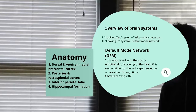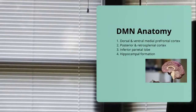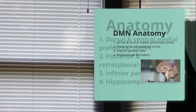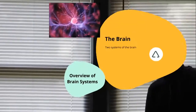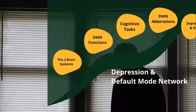A great description of the default mode network is that it is the part of the brain associated with socio-emotional function and is responsible for the self experienced as a narrative through time. The anatomy of the default mode network is made up largely of the dorsal and ventral medial prefrontal cortex, posterior and retrosplenial cortex, inferior parietal lobe, and the hippocampal formation. So again, looking in system and looking out system.